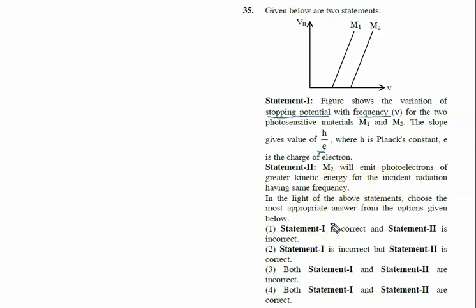Let's check how many statements are correct. We know Einstein's equation: light energy is H nu. This H nu is divided into H nu naught, that is work function, plus kinetic energy maximum.